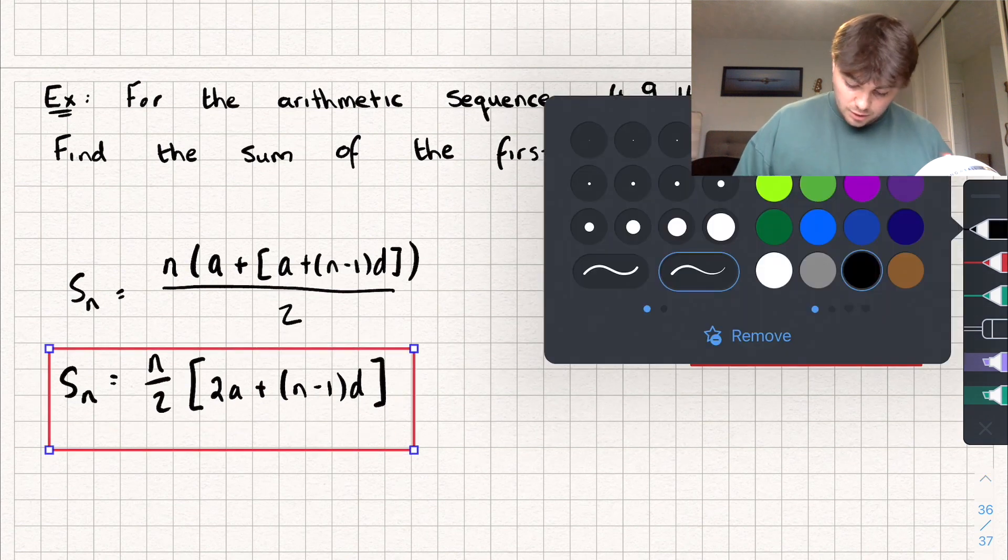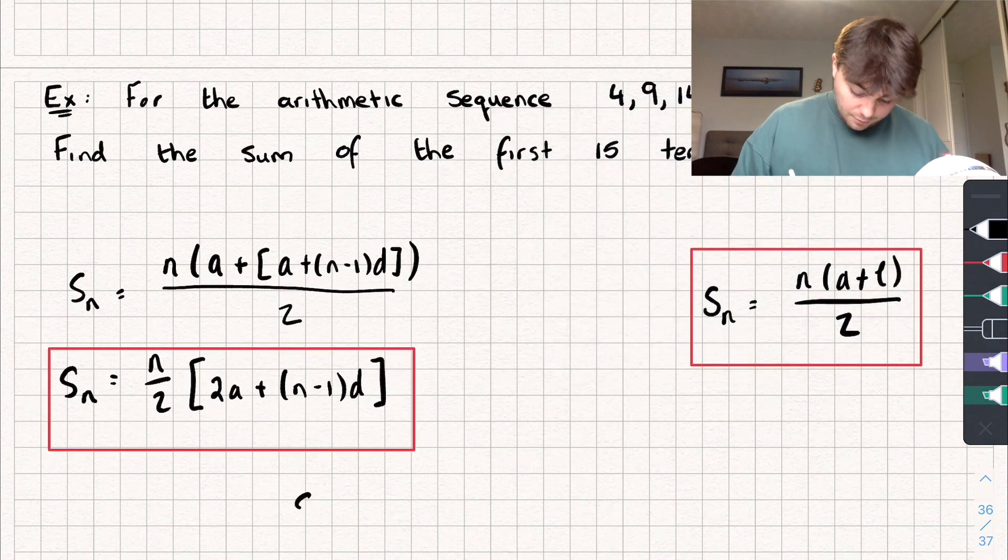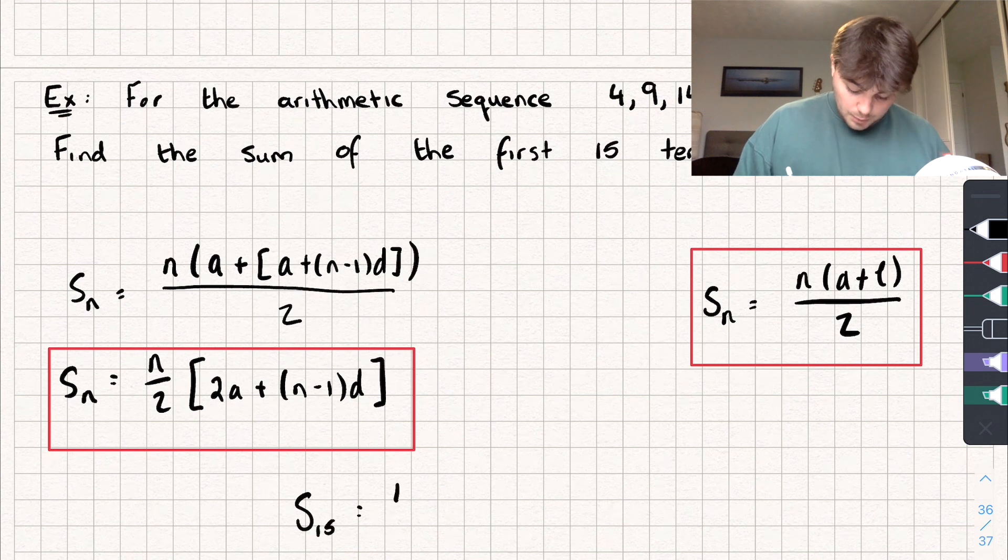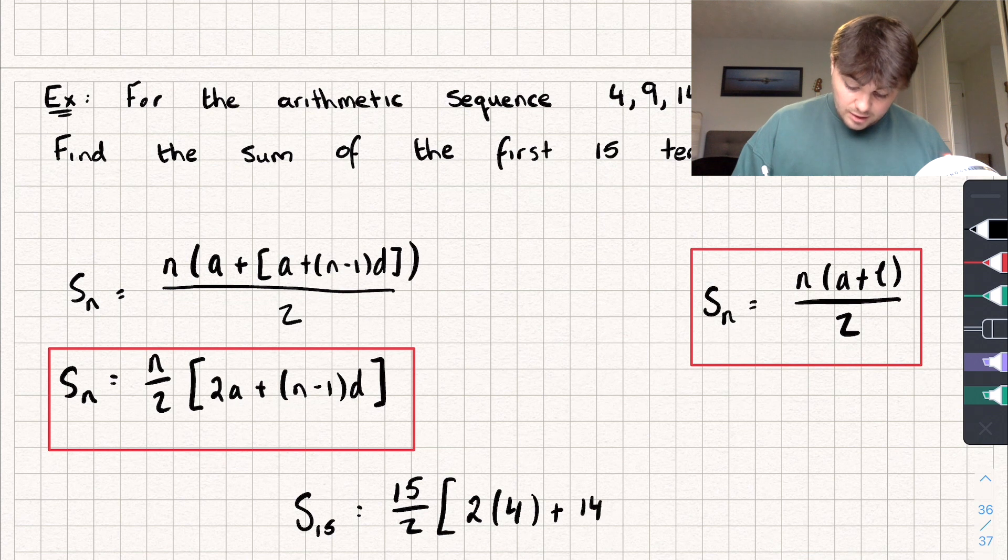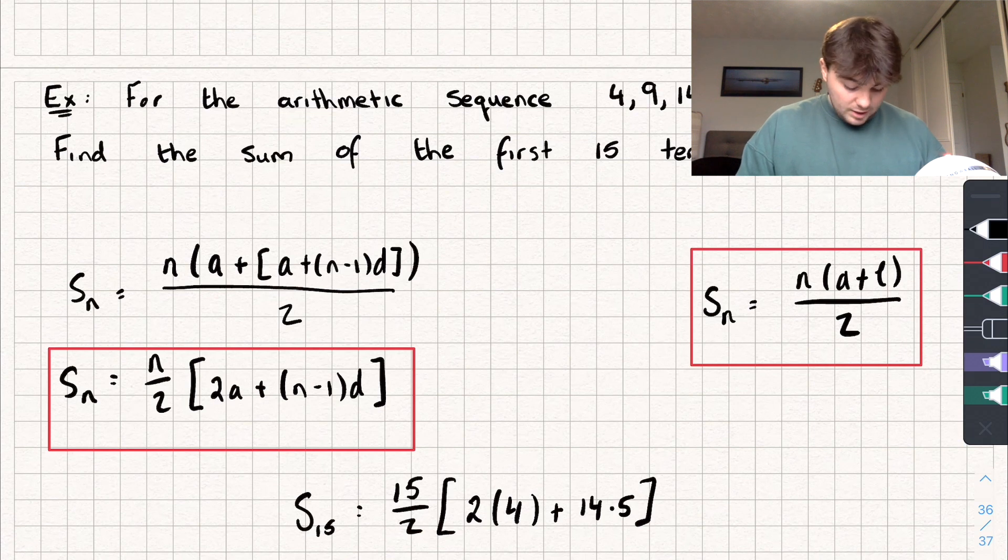So we want to find S of 15. And so that's when we have 15 divided by 2 multiplied by 2 times the first term, which is 4, plus (N minus 1), well N is 15, so 14 times the common difference, which is 5. And I'm just going to put all of that into my calculator, so 2 times 4 plus 14 times 5, and then we're multiplying that by 15 divided by 2, and we get an answer of 645.